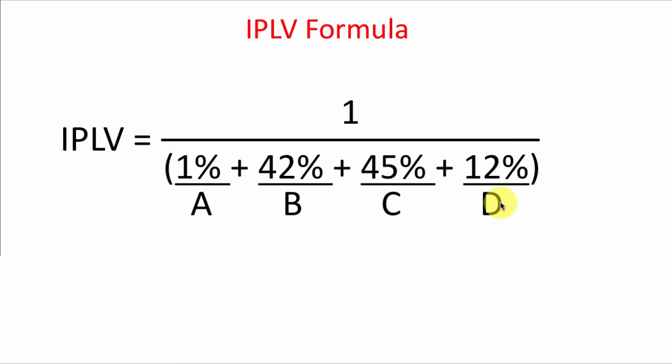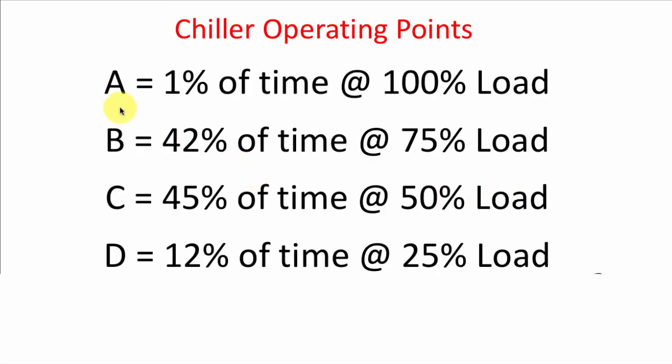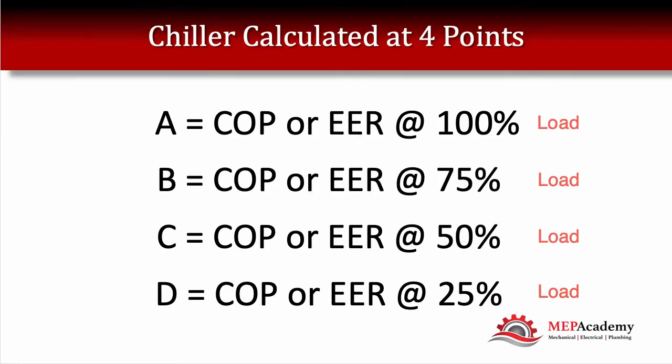So what are A, B, C, and D? The EER for these four points will be put into the calculation. A is 1% of the time, when the chiller is running at 100% load. B is 42% of the time at 75% load. C is 45% of the time at 50% load. And D is 12% of the time at 25% — quarter — load.